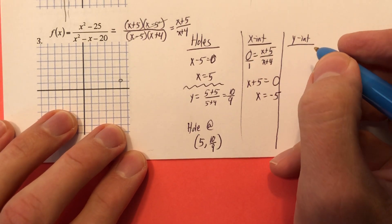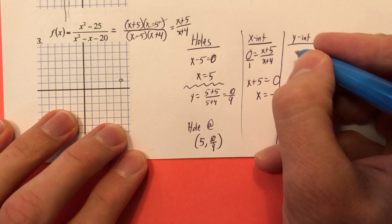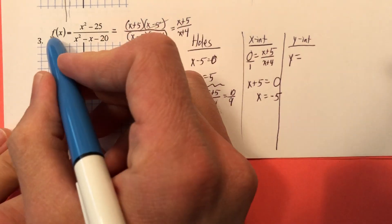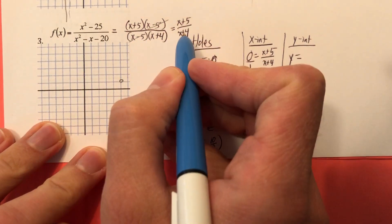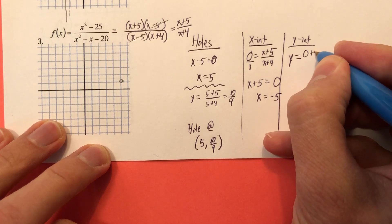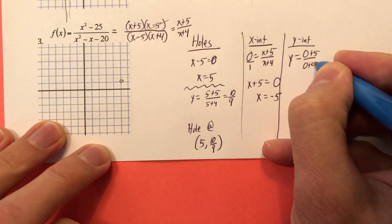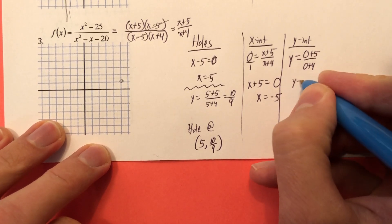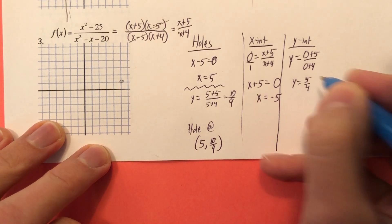Y intercept is going to be what happens when I plug in 0 for X. So Y equals, Y equals, no, no, yeah. So 0 plus 5 over 0 plus 4. That's 5 over 4. So Y equals 5 over 4. That's 1 and a quarter.